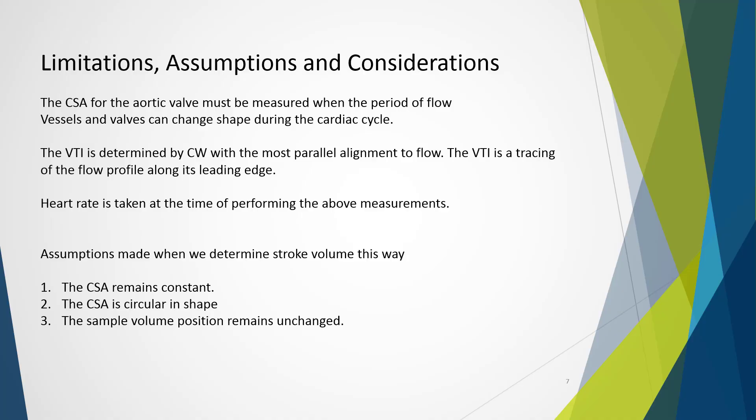Consider we're assessing aortic stenosis. We must be sure that the cross-sectional area for the aortic valve is measured when the period of flow is actually occurring. We also know that vessels of pulsatile can actually change in shape during the cardiac cycle. And this principle also applies for the valve as the annulus may deform to change in size or shape during the cardiac cycle. The VTI is determined by continuous wave Doppler with the most parallel alignment to the flow, and the VTI is made with a tracing of the flow profile around its leading edge. Heart rate is to be taken at the time of performing the above measurements.